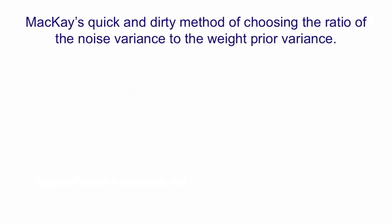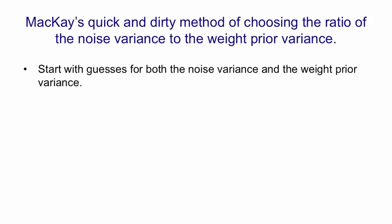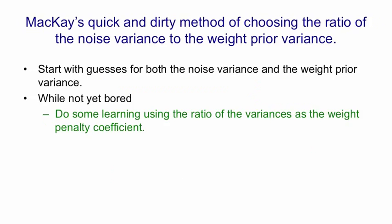So here's MacKay's method. You start by guessing the noise variance and the weight prior variance. Actually, all you have to really do is guess their ratio. Then you do some gradient descent learning, trying to improve the weights.